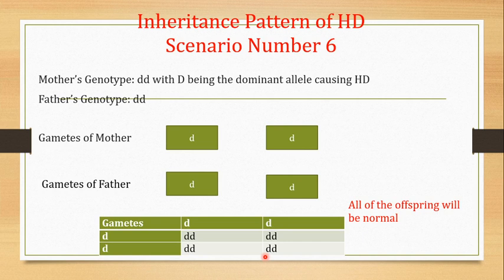Scenario number six: if both the mother and father are normal, you can expect all offspring to be normal. So these are some of the scenarios showing the inheritance pattern of HD in offspring and the occurrence of normal and diseased individuals.